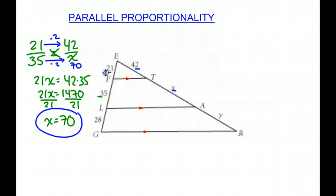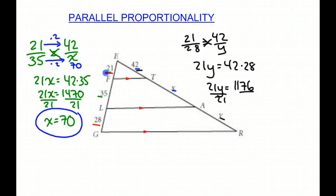Now we're going to do the same, but we're going to use Y. So we're going to do 21 and 28 and then 42 and Y because 28 is the corresponding side with Y. So 21 over 28 will equal 42 over Y. So we cross-multiply, 21 times Y equals 42 times 28. 21Y equals 1176. We divide by 21 and we get Y equals 56.